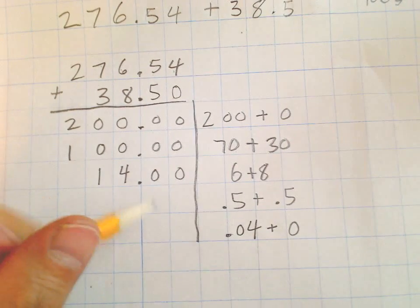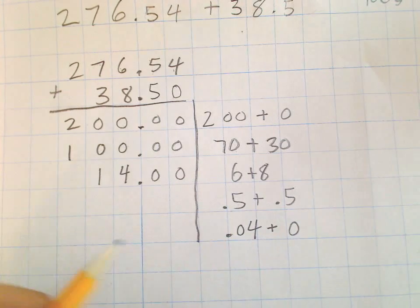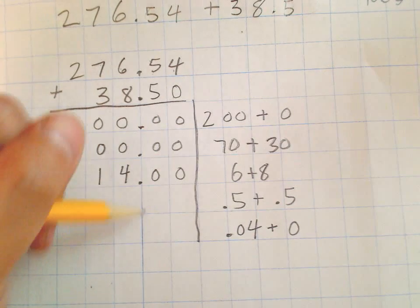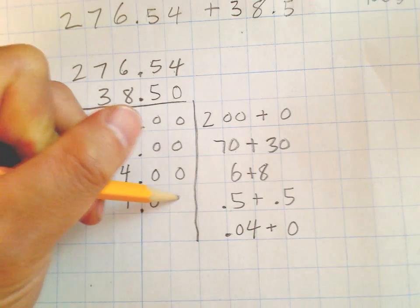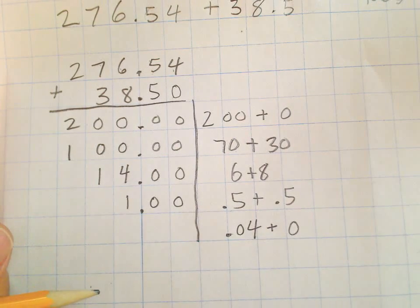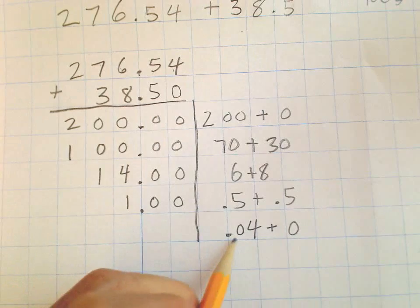Five tenths plus another five tenths, well that's ten tenths. What is ten tenths really but one whole? Then we've got no tenths, no hundredths. And then we've got the hundredths: four hundredths plus no hundredths, well that's four hundredths.